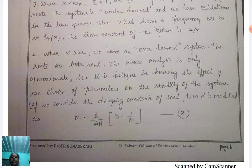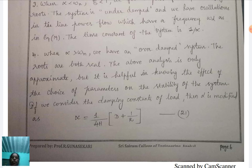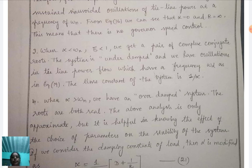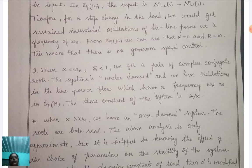The fourth case is when α > ω_N — we have an over-damped system and the roots are both real. This analysis is approximate but helpful in understanding the effect of parameter choice on system stability. If we consider the damping constants of the load, then α is modified as α = (1/4H) × (D + 1/R). The second-order response under over-damped, under-damped, and critical damping conditions, including the roots and time constants, completes the tie-line oscillation analysis for the two-area system.